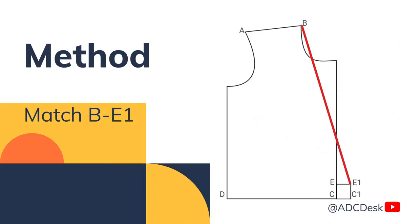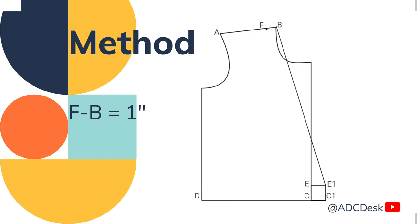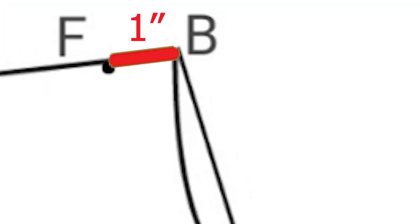Then, draw a diagonal line by matching B to E1. Now, mark 1 inch towards the armhole or point A from the point B and mark it as F.